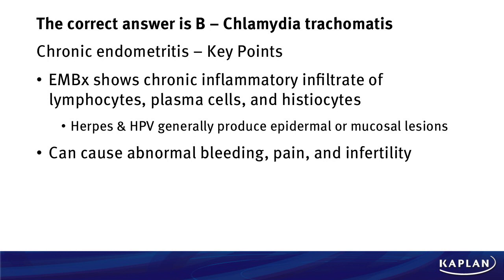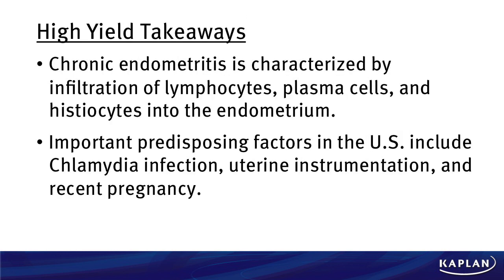Herpes and HPV generally produce epidermal or mucosal lesions, not things that show up on the endometrial biopsy. It can cause bleeding, pain, or infertility, and these are things to be looking out for in these patients. The high-yield takeaway for chronic endometritis is that it is characterized by these infiltrates on endometrial biopsy of lymphocytes, plasma cells, and histiocytes.